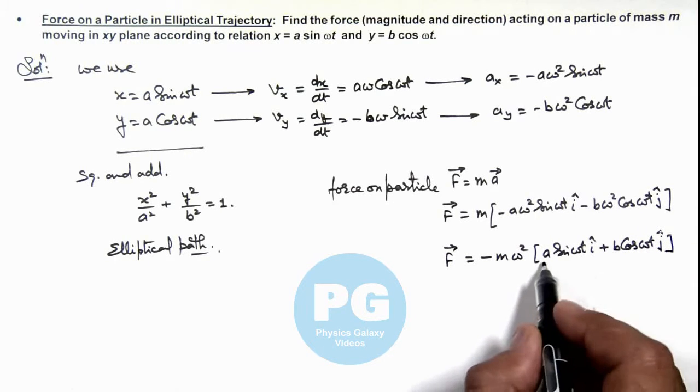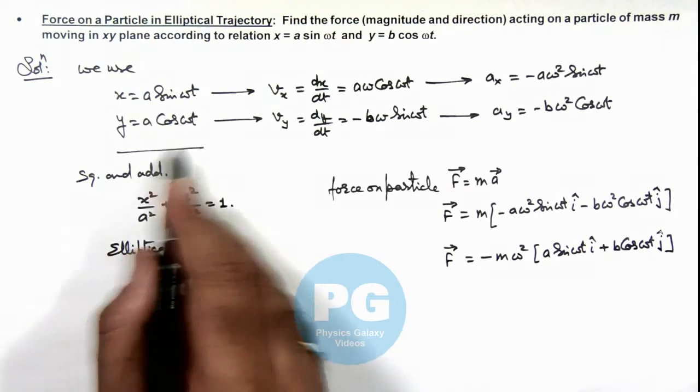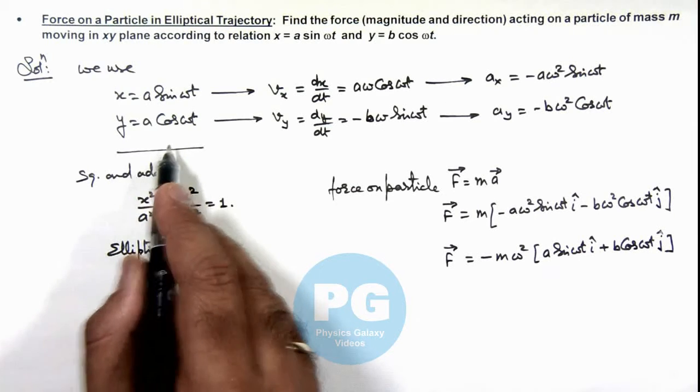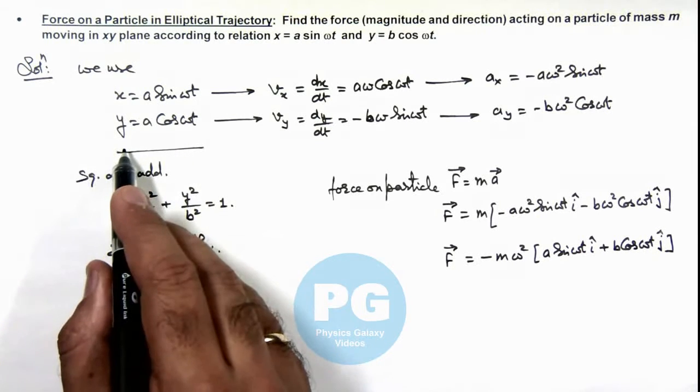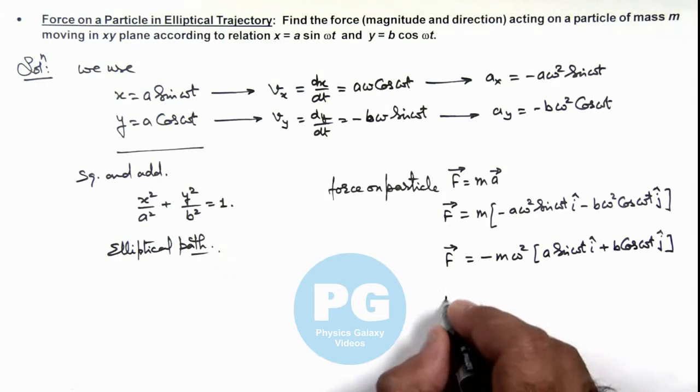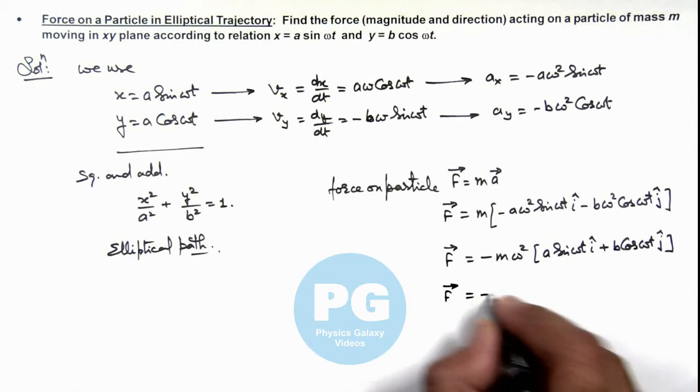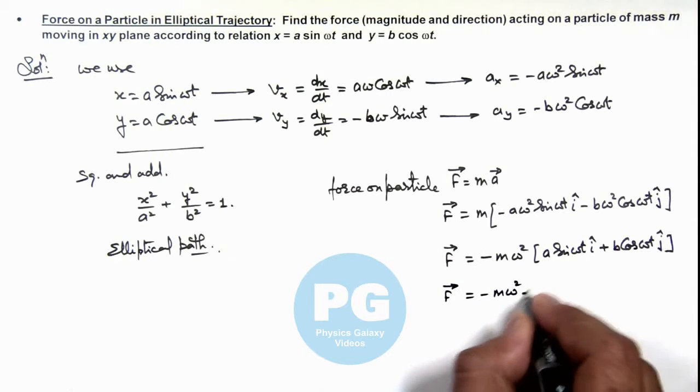And here we can see a sine omega t and b cosine omega t are the positions of particle in x and y directions. So here f vector can directly be written as minus m omega square r vector.